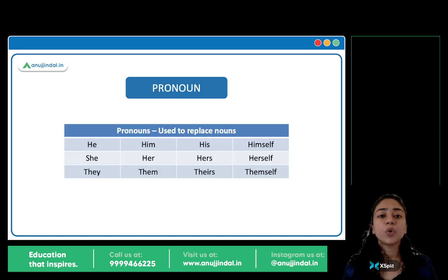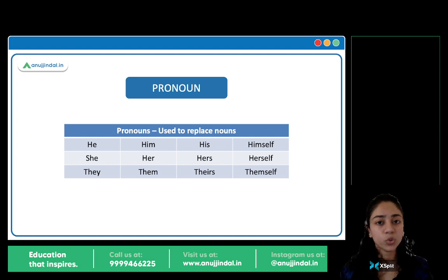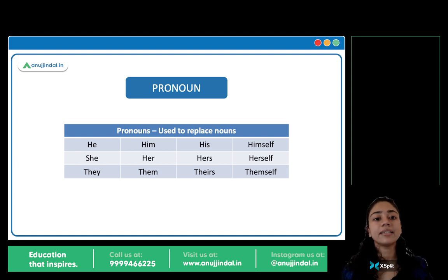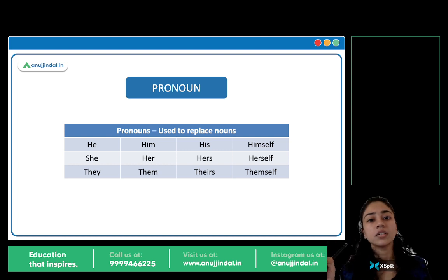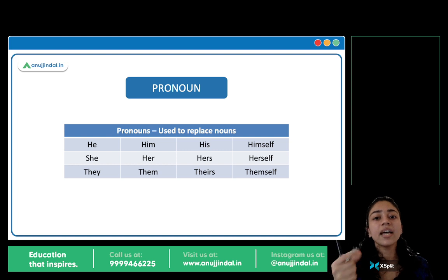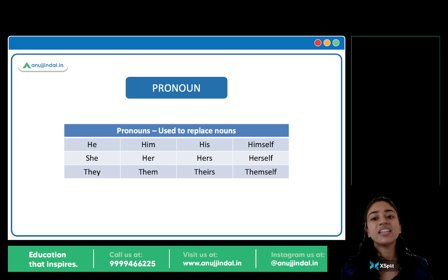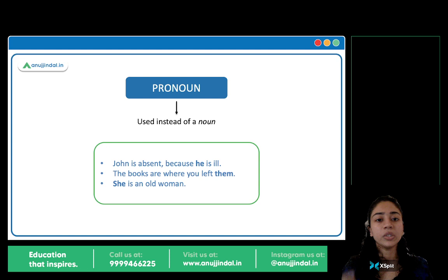Next: pronoun. Pronoun kub use hota hai? It is used to replace a noun — noun ki jagha joh use hota hai, usse pronoun kehte hai. Jaise: he, him, her, his, she, they, them. Aajkal you'll see a lot of people — on their social media profiles, unke naam ke baad bracket mein likha hota hai: he/him, her/hers — what are your pronouns? Toh yeh sare pronouns hai: he, she, them, they. These are pronouns — used instead of nouns.